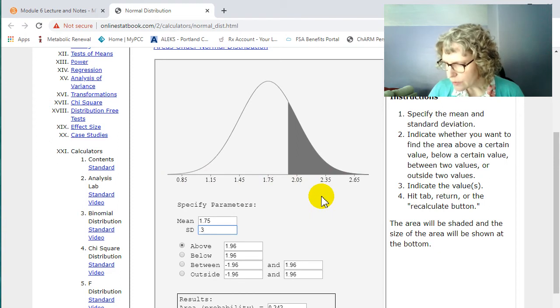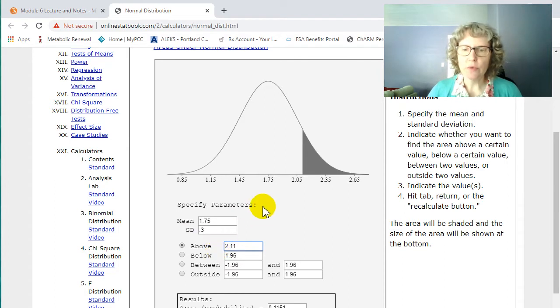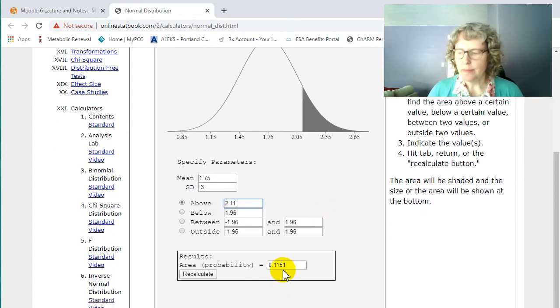And then let's say we want to match, we want this shading to match the probability that we're finding. So we want above 2.11. And that is one of the problems we did in the notes and it's 0.1151. Same thing we got.